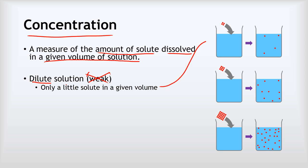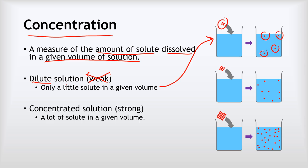We can see that here: a little lump of solute with only a few solute particles dissolved. We could also have a concentrated solution — the everyday word is 'strong' but let's use 'concentrated' — meaning a lot of solute in a given volume. This example shows a concentrated solution with a large lump of solute producing lots of solute particles. There's also a medium concentration shown, somewhere between the dilute and concentrated examples.